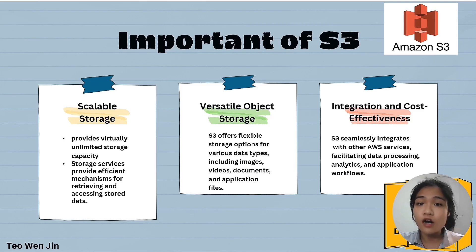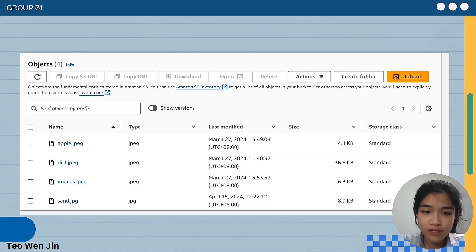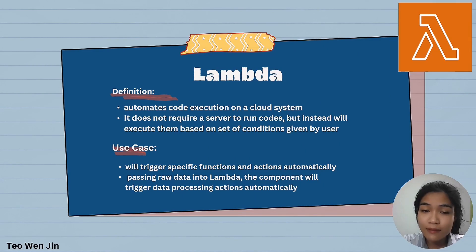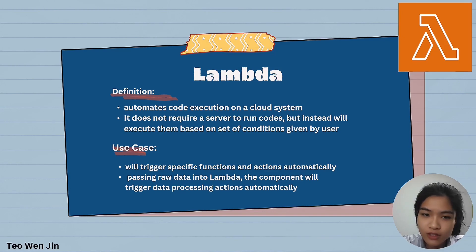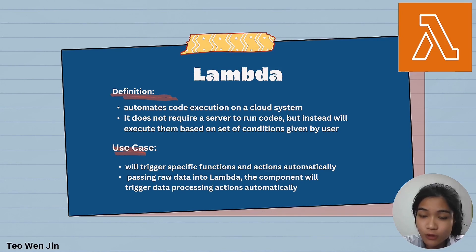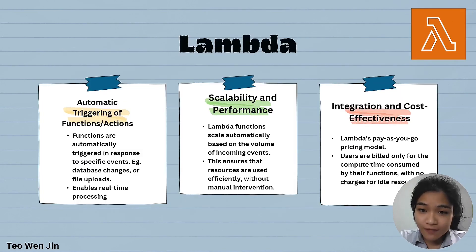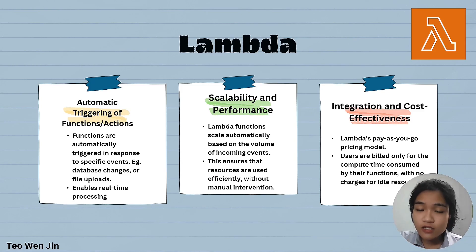The storage service offers a cost-effective pricing model, allowing the system to optimize storage costs based on usage patterns and requirements. This image shows how we use S3 in our system — we store images in buckets, and each bucket contains all images. Lambda is used to automate code execution on a cloud system. It does not require a server to run code; instead, it executes code based on a set of conditions given by the user and triggers specific functions and actions automatically. The reason we chose Lambda is because it has automatic triggering of functions, scalability and performance, and it is also very cost-effective.